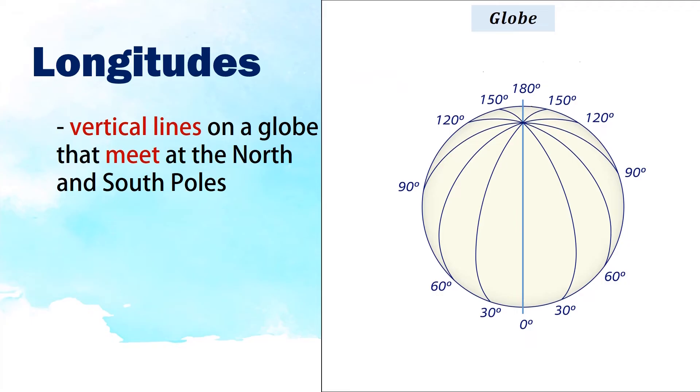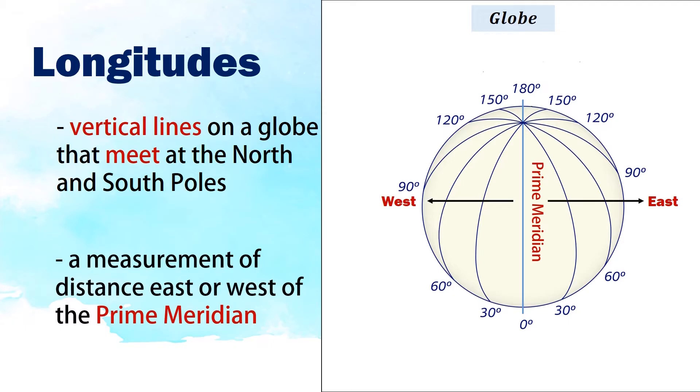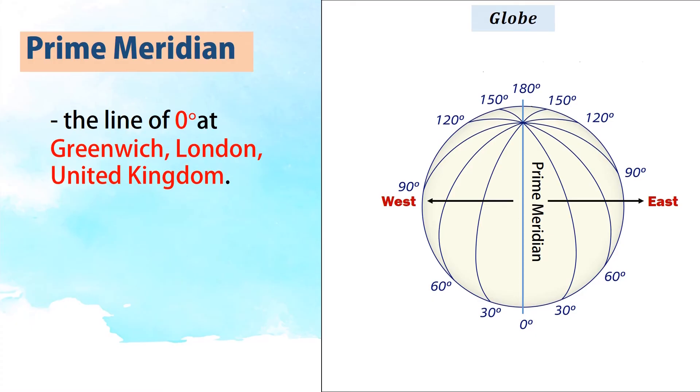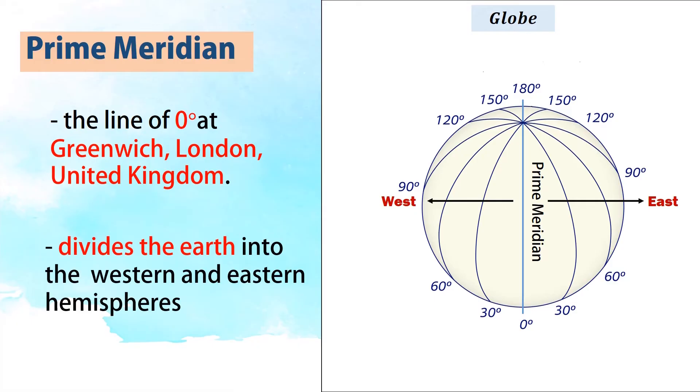Longitudes are a measurement of distance east or west of the prime meridian. The prime meridian is at longitude zero degrees at Greenwich, London, United Kingdom. It divides the Earth into the western and eastern hemispheres.